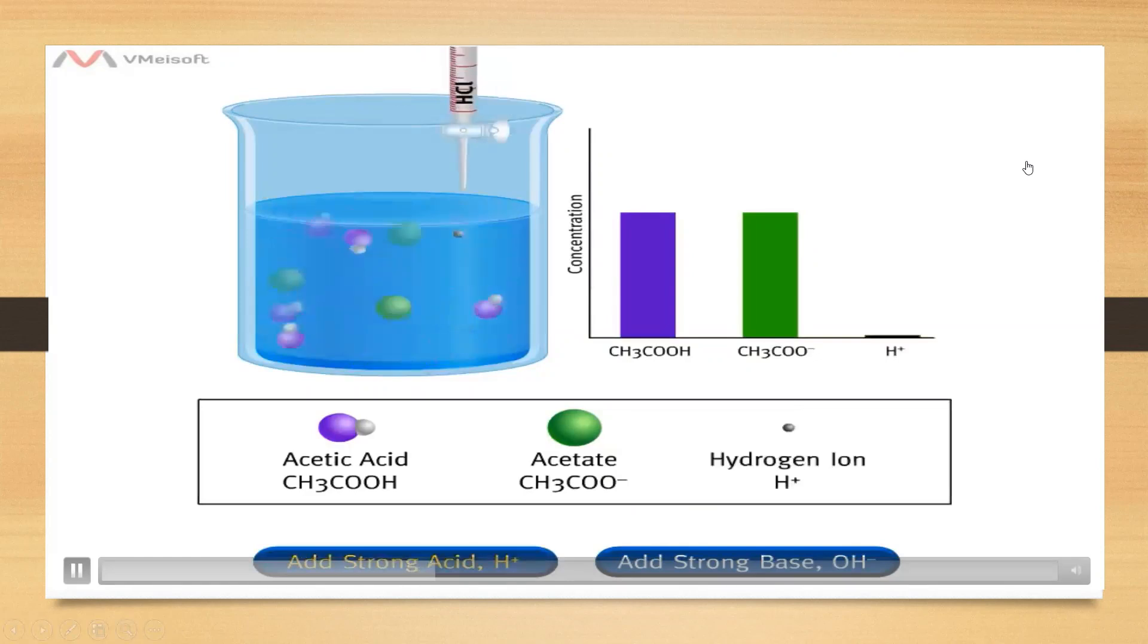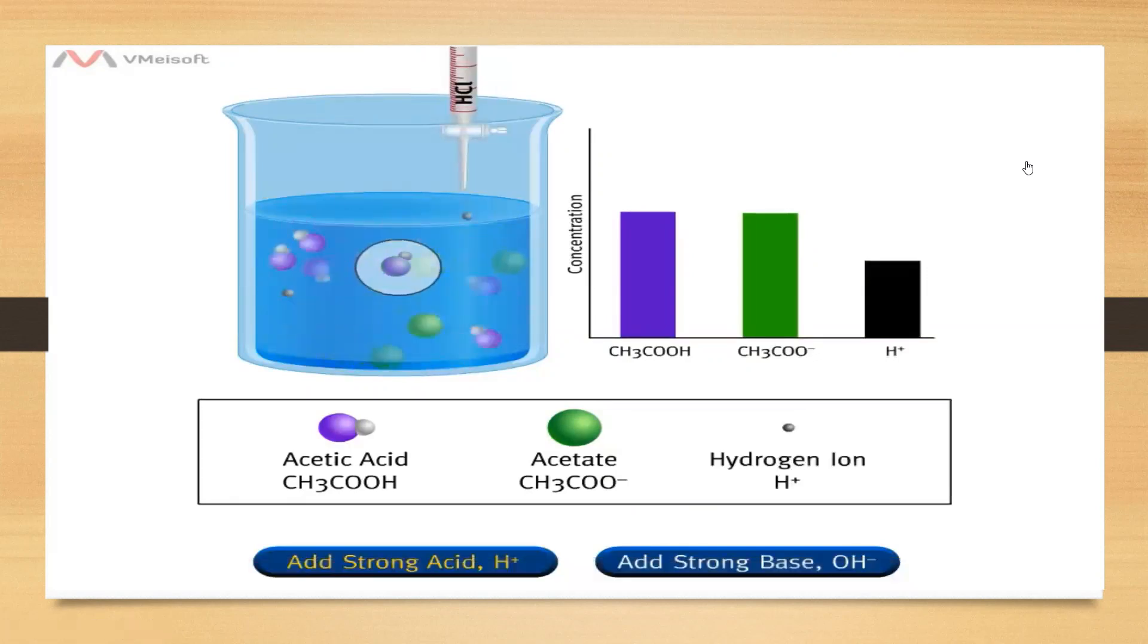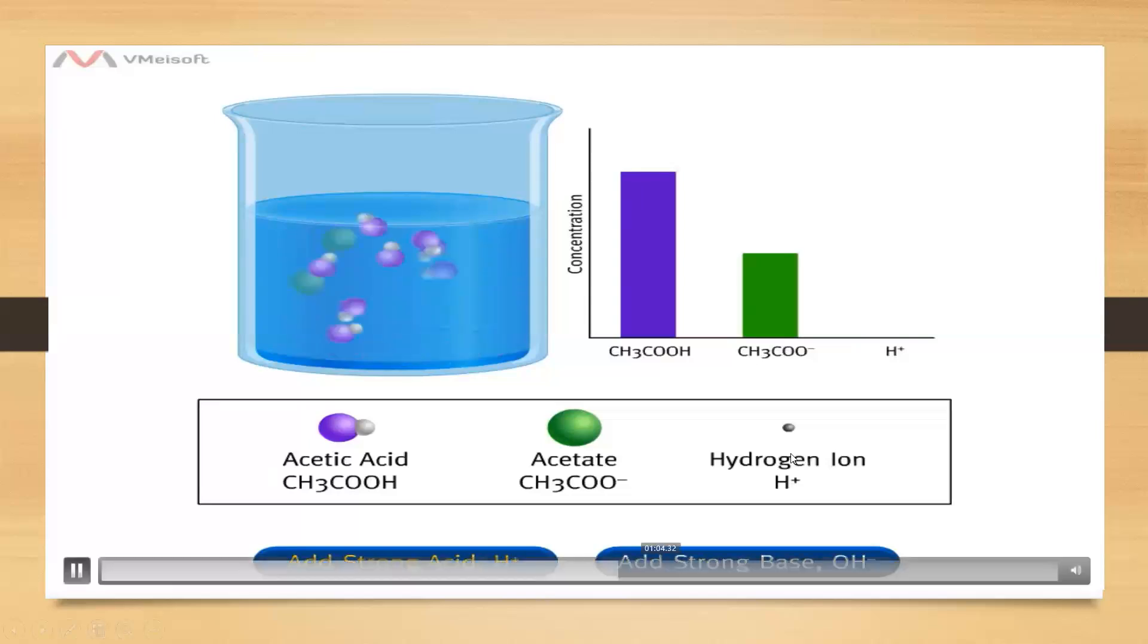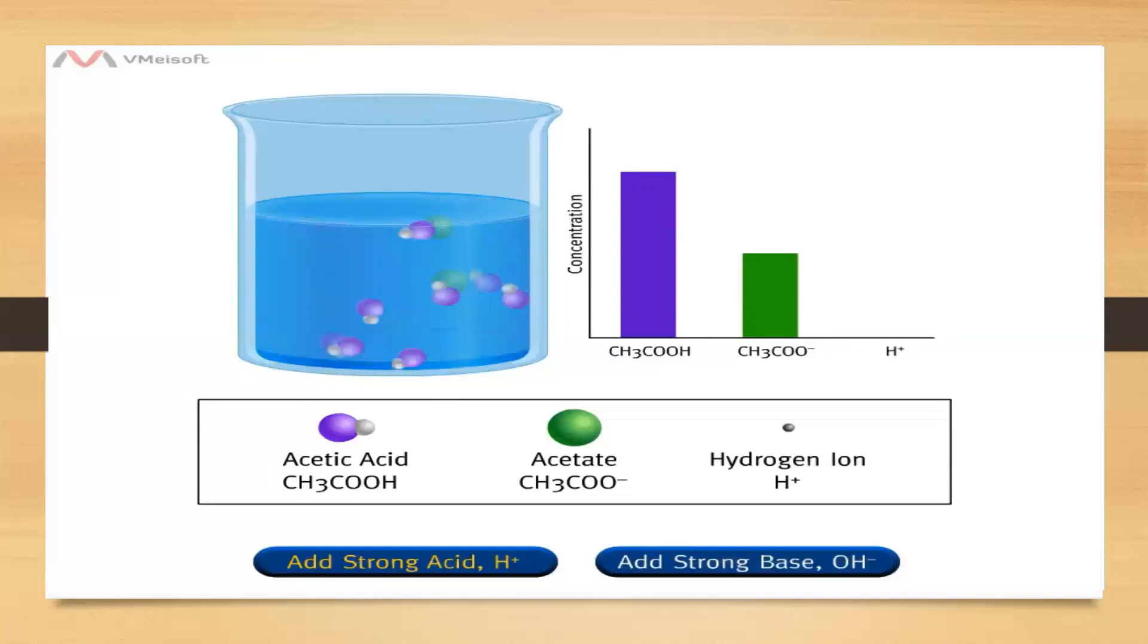Only hydrogen ions, H+, from hydrochloric acid are shown entering the solution. Chloride is not shown because it is a spectator ion. It does not participate in the reaction. The strong acid H+ reacts with the base component of the buffer, acetate (CH3COO-), producing the acid component of the buffer, acetic acid (CH3COOH). The buffer has resisted a change in pH by removing strong acid H+ from the solution.